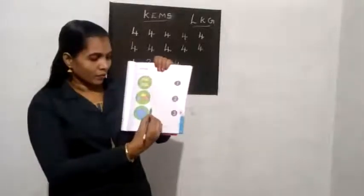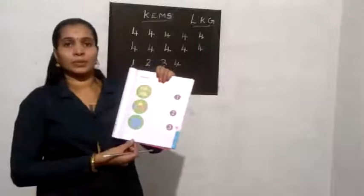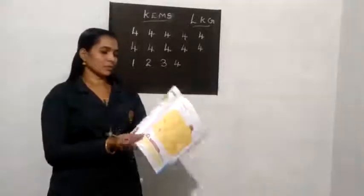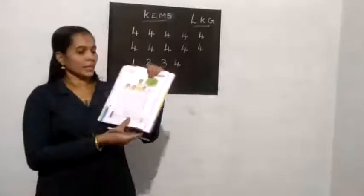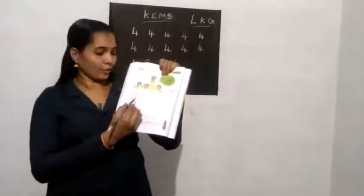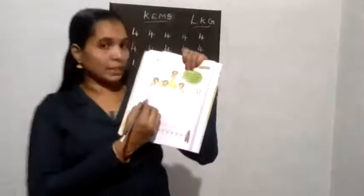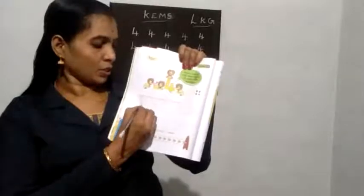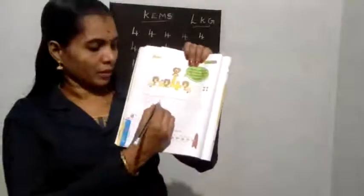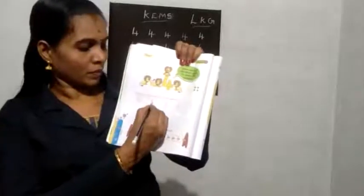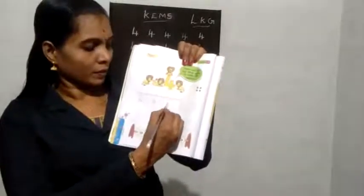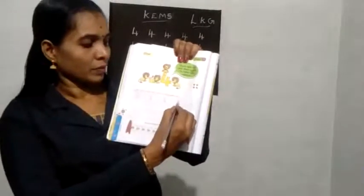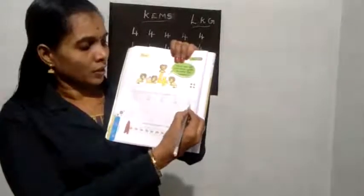Then 1. Which is this number? Yes, 4. Number 4. Chart with the green dot. Then 4, 4, 4, 4.